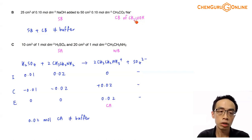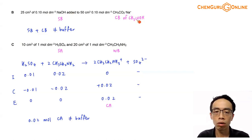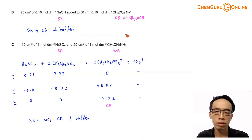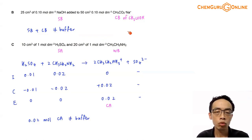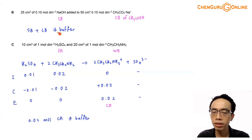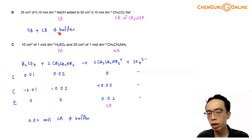I have a mixture of strong base and conjugate base of a weak acid. When you have strong base plus conjugate base, it cannot function as a buffer because a buffer needs to be acid plus base — I need an acid to remove OH⁻ and a base to remove H⁺, and it must be a conjugate acid-base pair. A mixture of base plus base is not able to maintain pH. So B we can ignore.